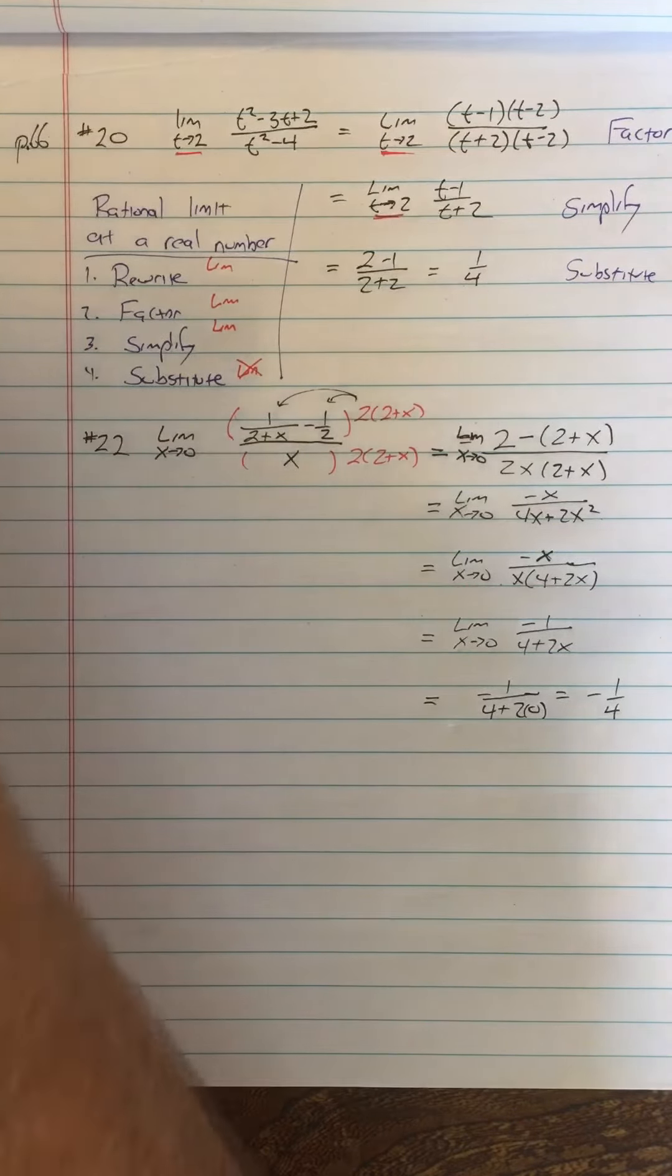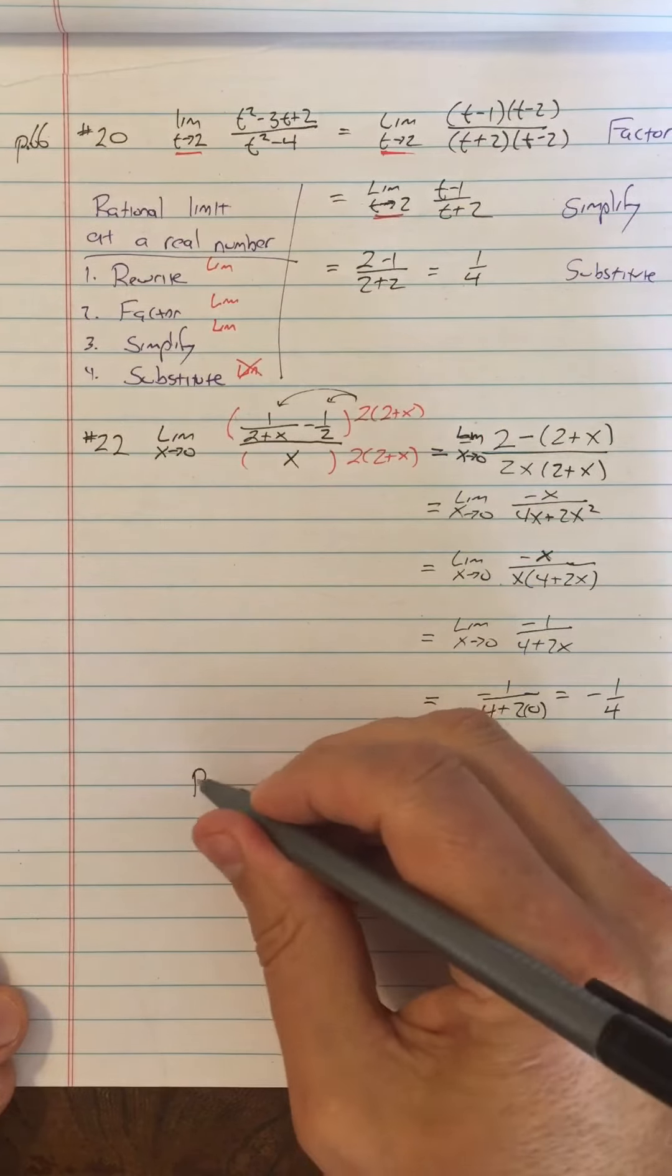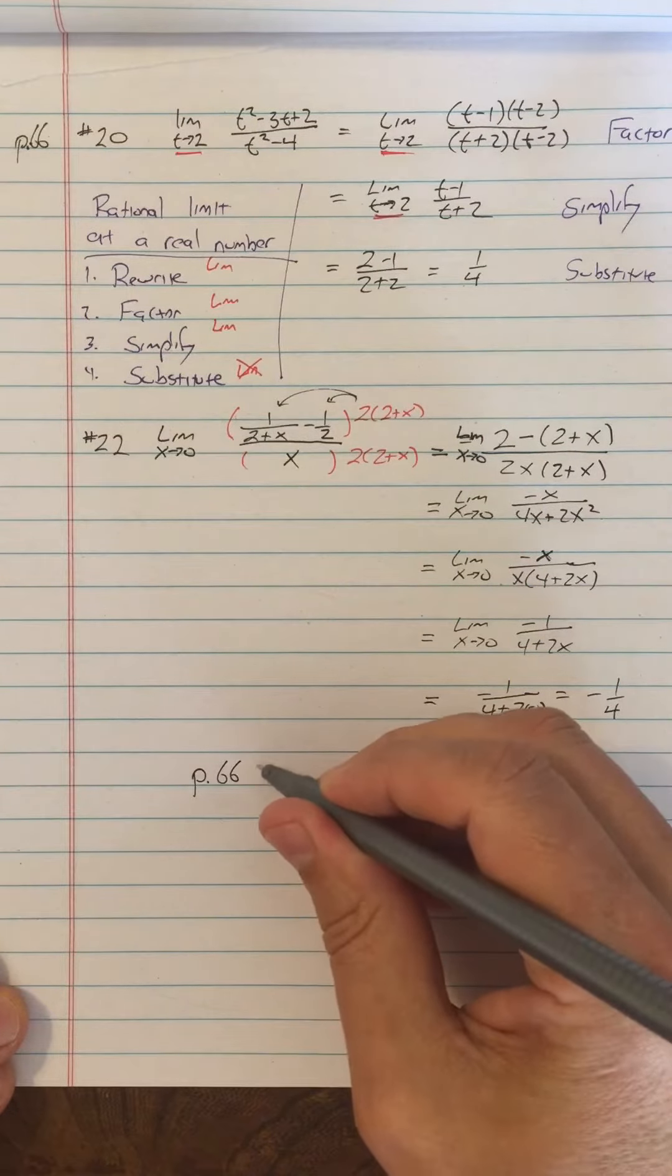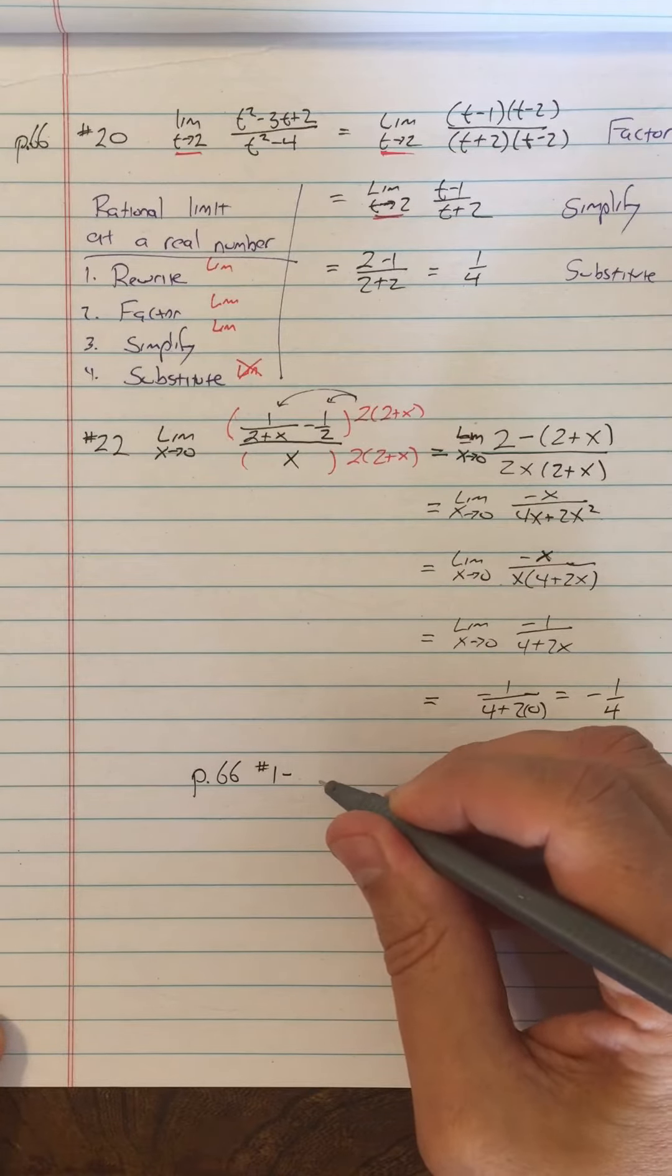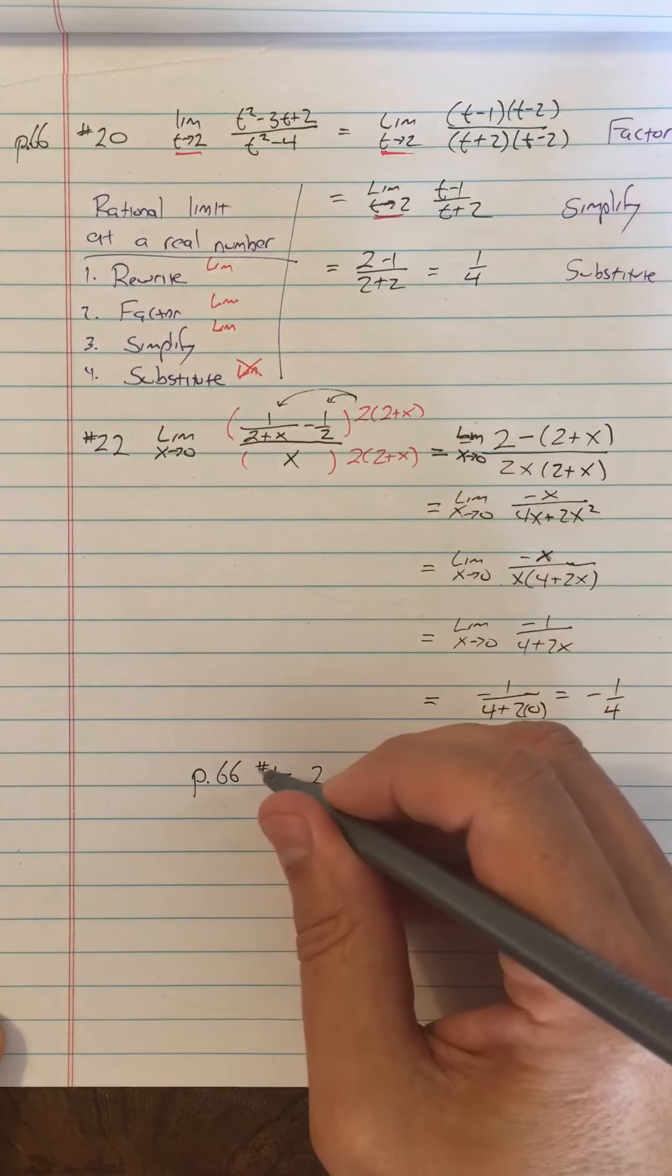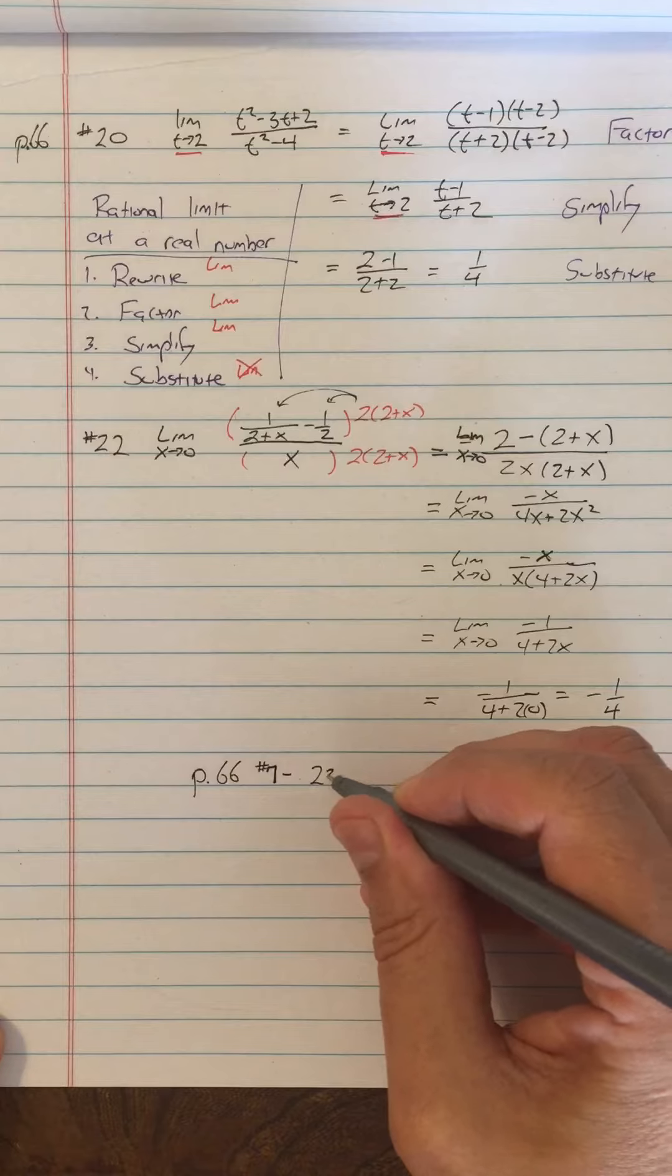So your homework on page 66 is going to be 1 through 43 odd, but what I'd like you to start on right now is number 1 through 23 odd. No, it's not 1, it's 7, 7 through 23 odd.